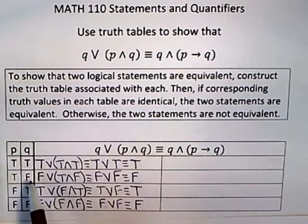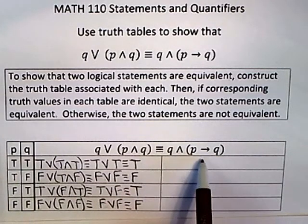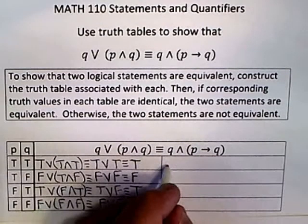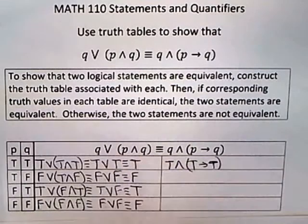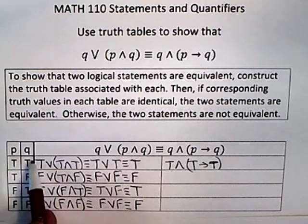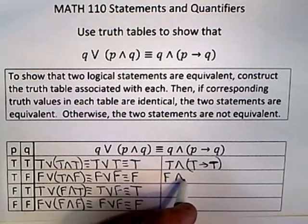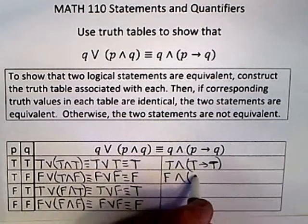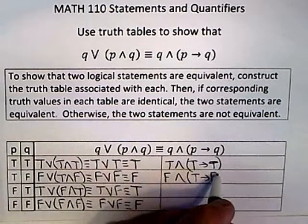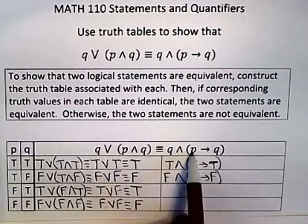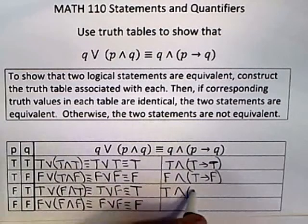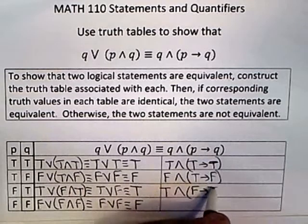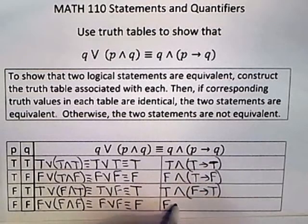Now I move over and do the same thing for the right-hand side, taking the four combinations. P true, Q true: I get true AND true implies true. Then P true, Q false: I get false AND true implies false. Then P false, Q true: I get true AND false implies true. And lastly both false: I get false AND false implies false.